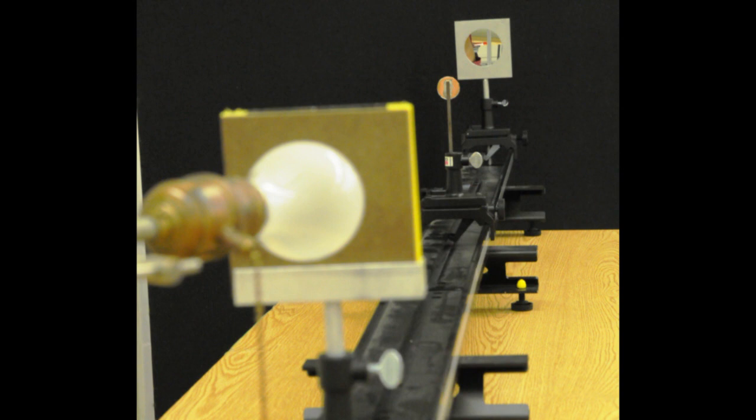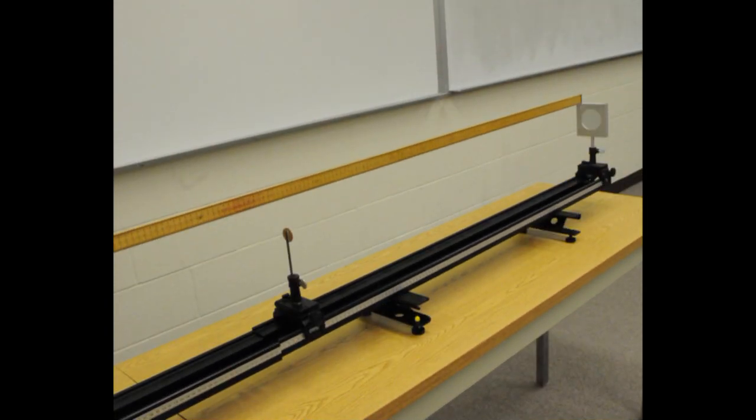Place the small viewing screen directly between the object and the mirror. Begin with the mirror 200 centimeters from the object and locate the image. We just measured object image distances with the 2 meter stick.